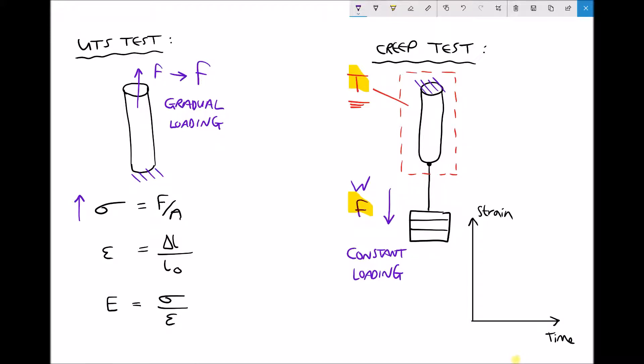So from what we've already learned we know that when we apply a force F to that test piece it's going to undergo an instantaneous strain. So at time zero we're going to have an instantaneous strain which we call epsilon zero, original strain or initial strain.